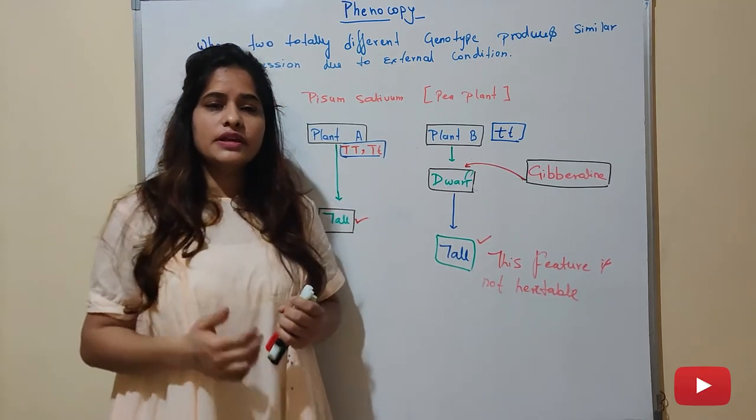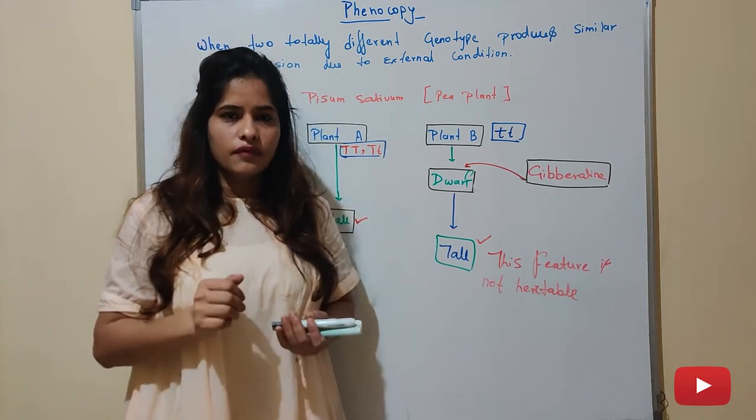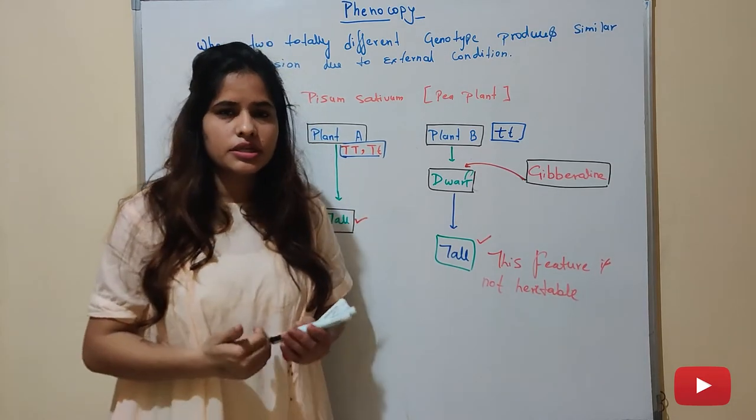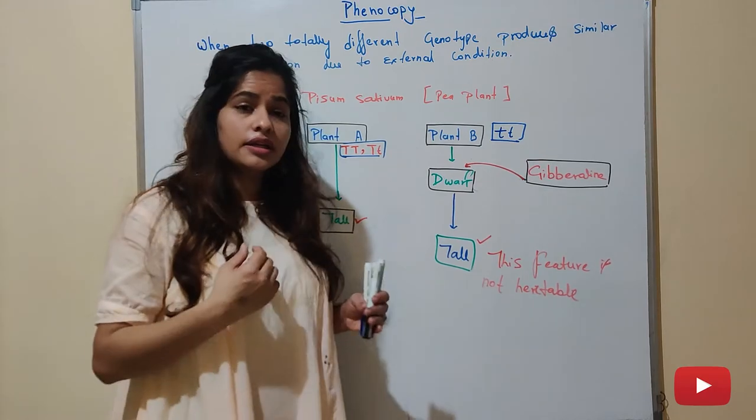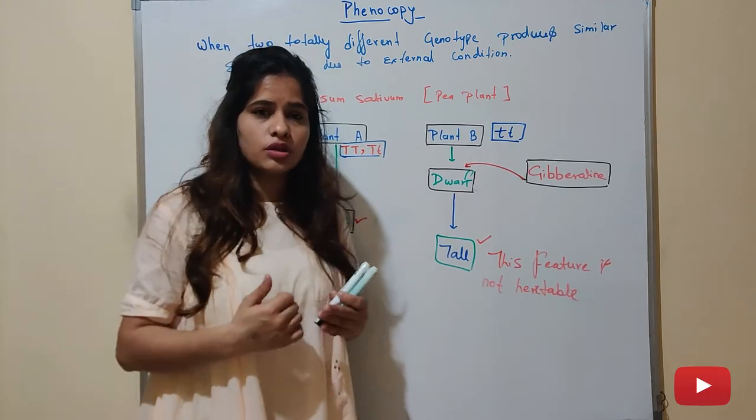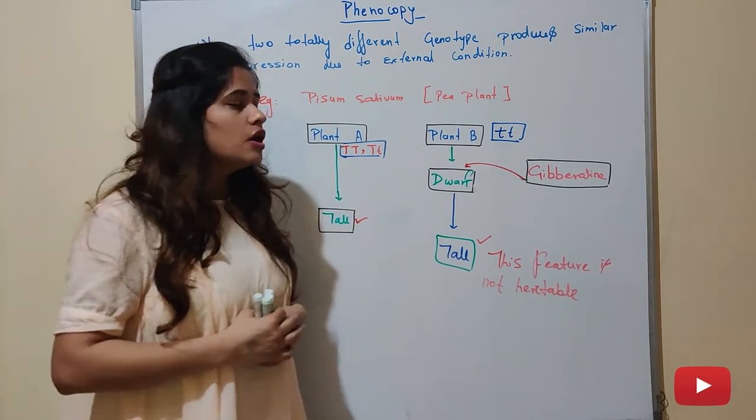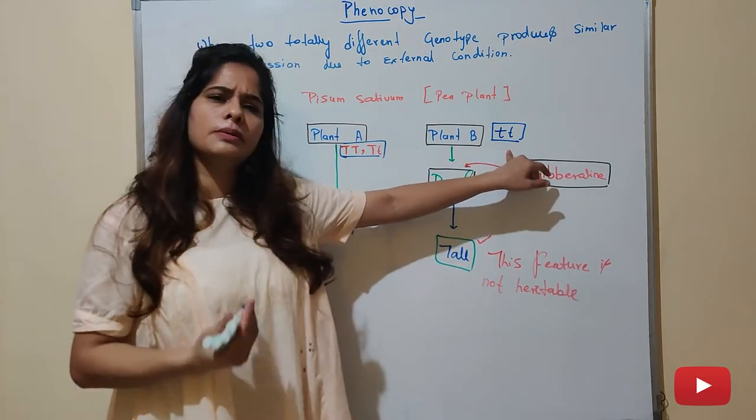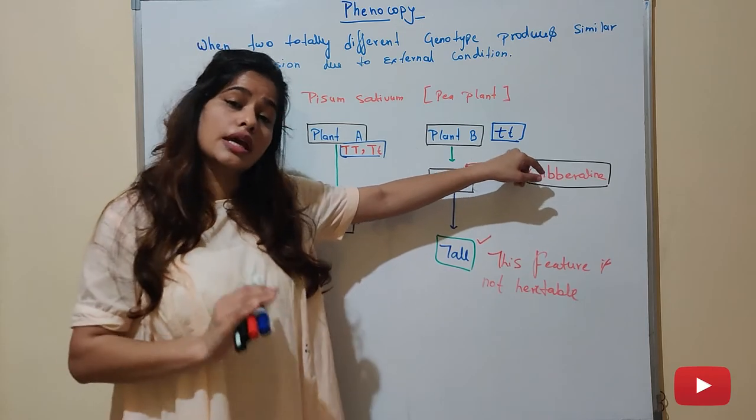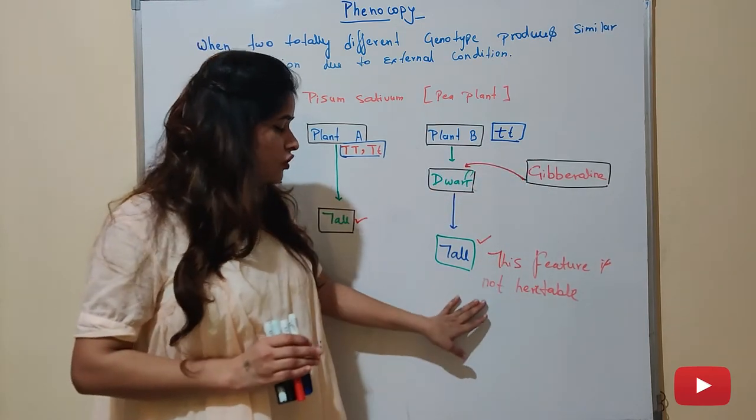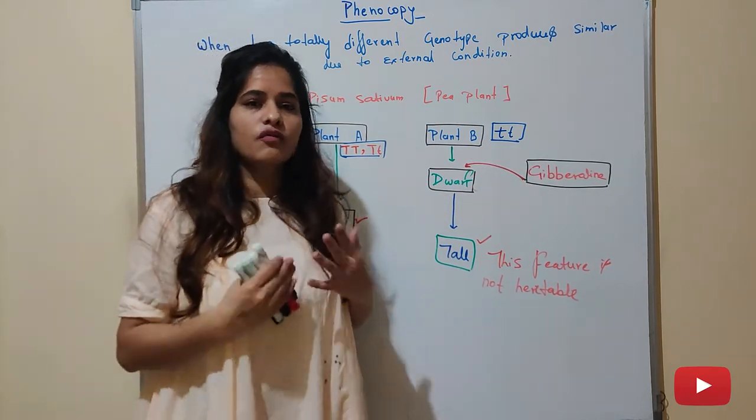We have seen in previous classes when we studied heredity and variation, we saw there that any unit that passes, the genetic material passes from one generation to another generation. So the genetic material of Plant B is still the same, and we have only changed the phenotype.